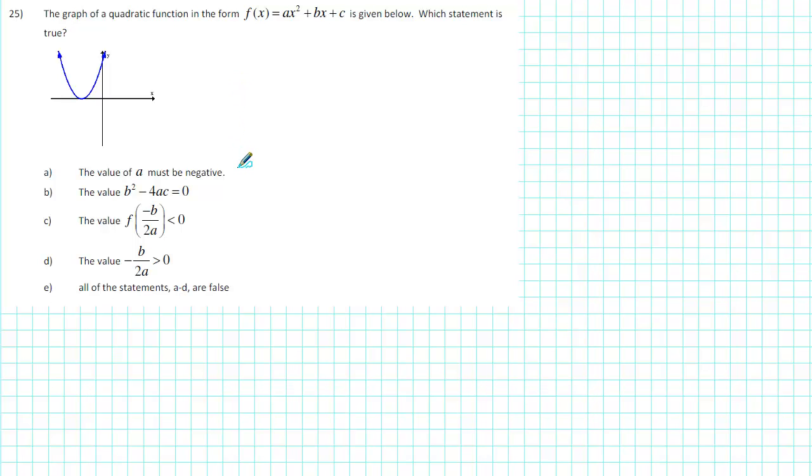The first statement says that the value of a must be negative. Well, when we locate a in the function, we notice that a is the leading coefficient. The leading coefficient determines whether the parabola opens up or down. If the leading coefficient is positive, the parabola opens up. If the leading coefficient is negative, the parabola opens down.